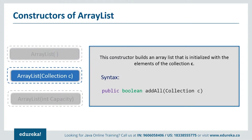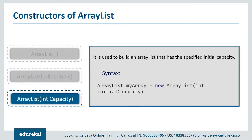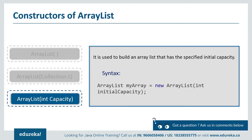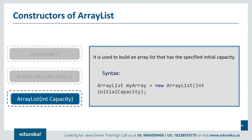Next, ArrayList(Collection c) — this constructor is used to add all the elements of a specified collection C to the current ArrayList. Next, ArrayList(int capacity) — this is used to build an ArrayList that has a specified initial capacity. The initial capacity is the number of cells that the ArrayList starts with; it can expand beyond this capacity if you add more elements. Now let's see a small example to understand how and where these constructors are used in ArrayList.